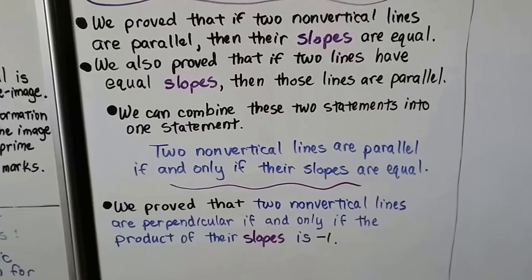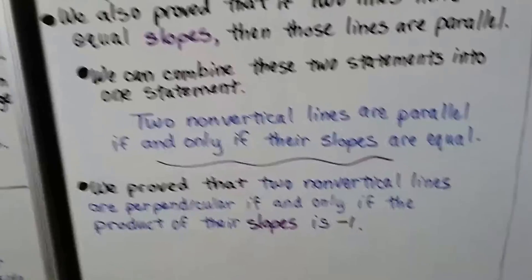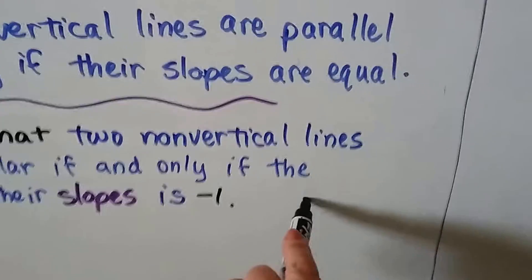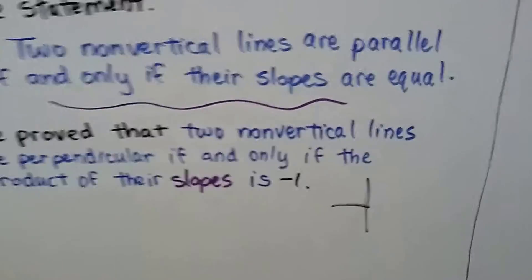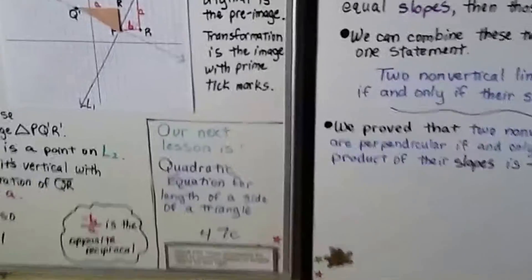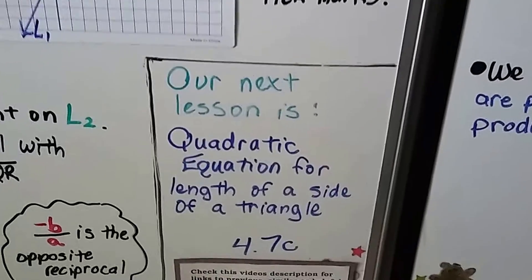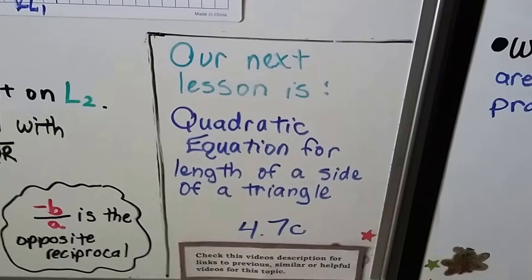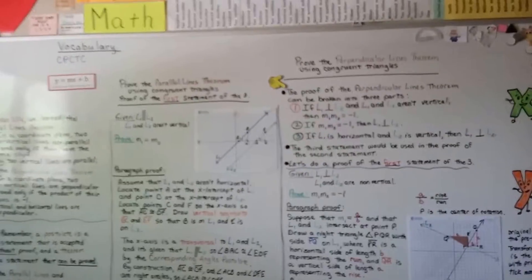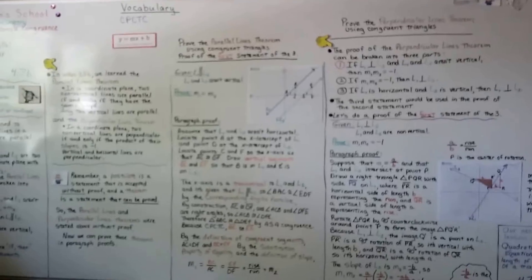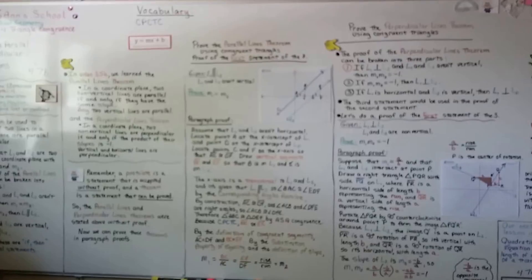You can remember that the perpendicular condition is negative 1 because it kind of looks like it's making perpendicular lines with that negative 1. Our next lesson, 4.7c, will cover quadratic equations for the length of a side of a triangle, which will set us up for 4.8c. Make sure you're writing down these theorems and postulates — they're really important and will help you. If you can put them all in one section of your notes, you can refer back to them for all these proofs.